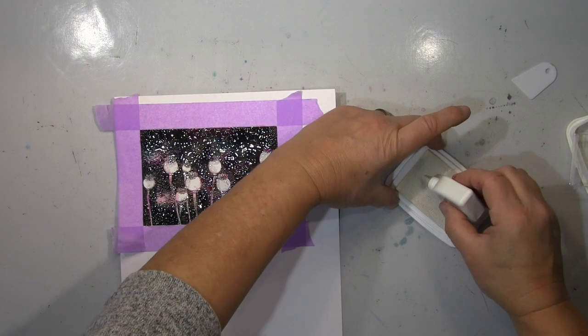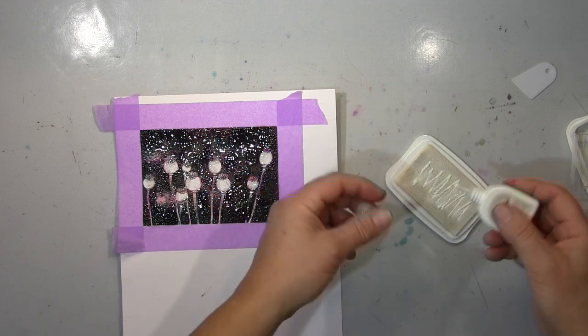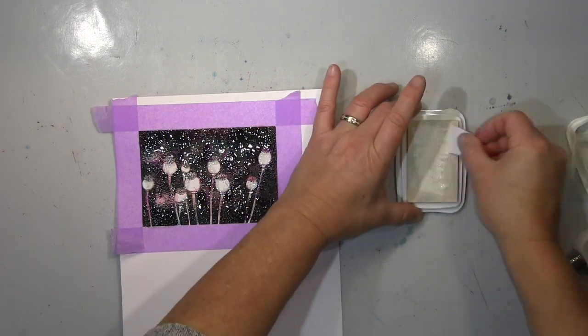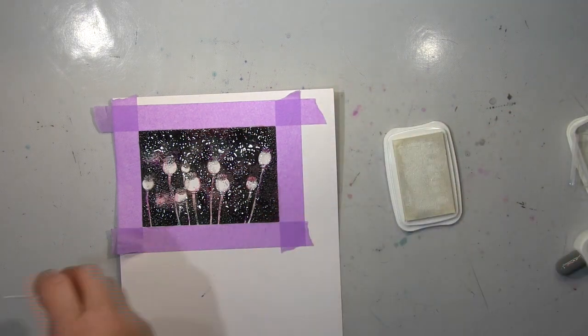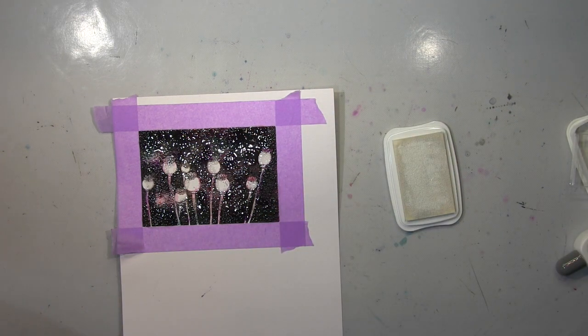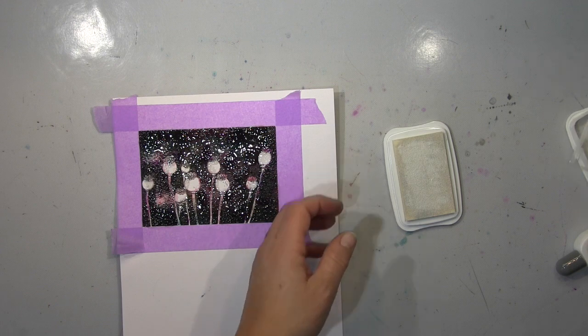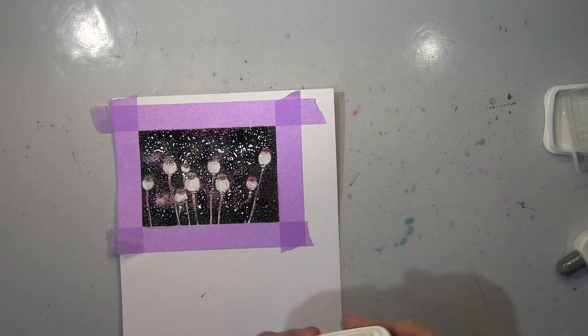Und jetzt benutze ich das Weiße, das ist StazOn und benutze das. Du musst das immer ganz frisch machen auf diesem Ding. Aber das ist einer der wenigen Weiß, die wirklich nicht durchlässig sind, die nicht transparent sind. Die sind wirklich sehr deckend.